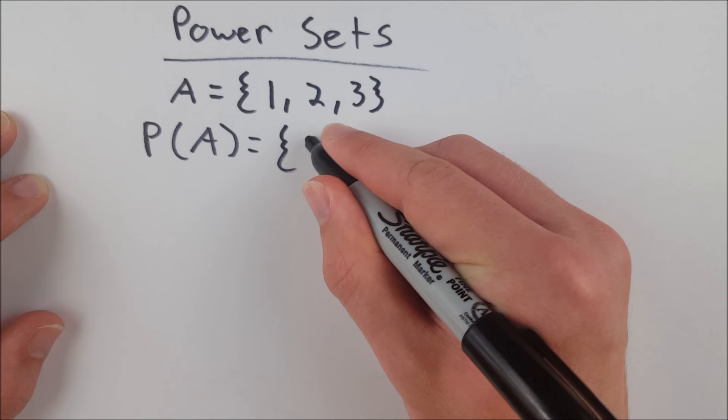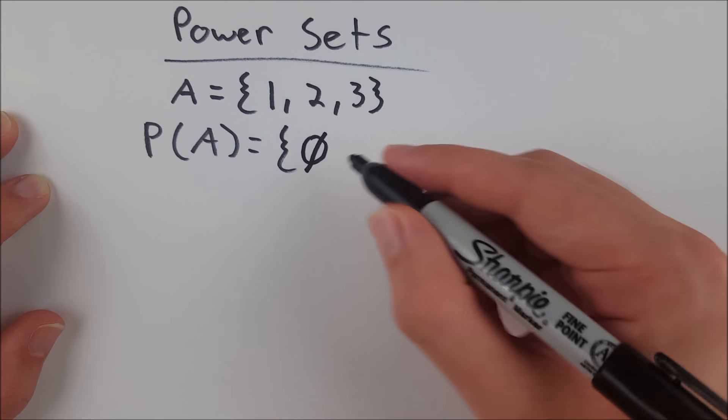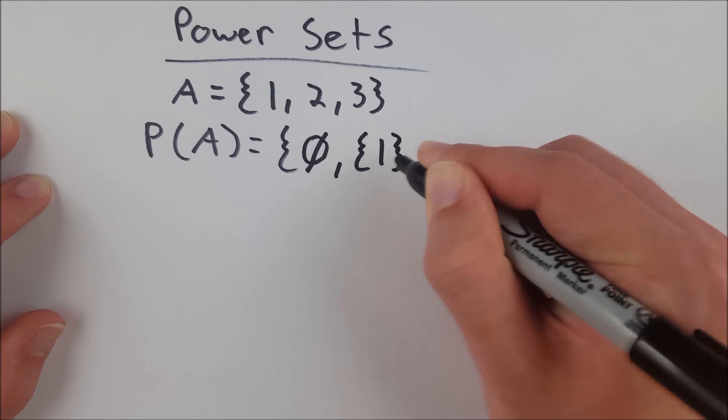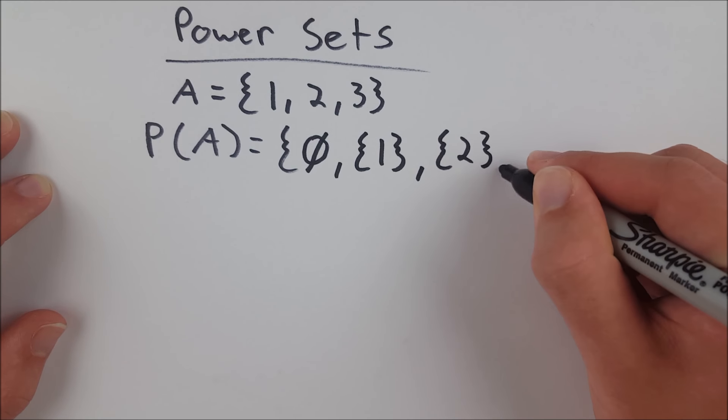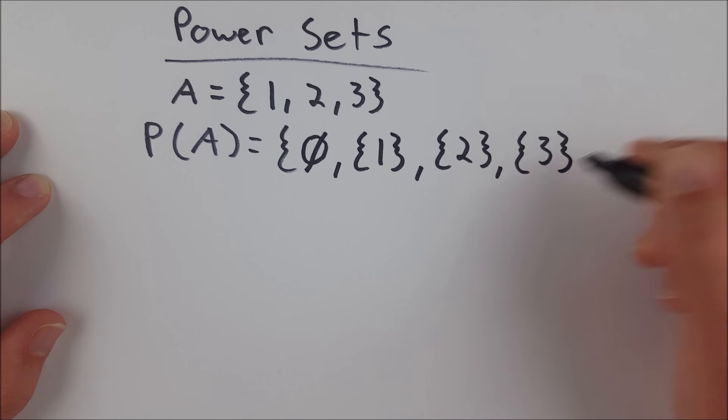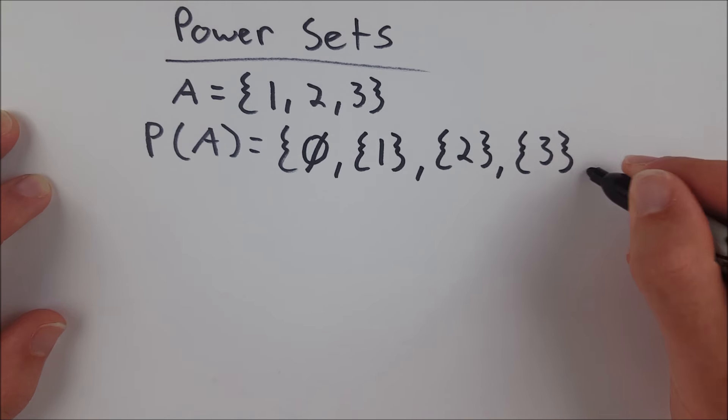So let's do this example. For starters, we have the empty set because the empty set is a subset of every set. Then we have the set containing 1. This set's a subset of A. We have the set containing 2. That's a subset. Remembering that a subset of one set is any set whose elements are all present in A.